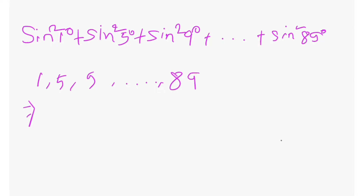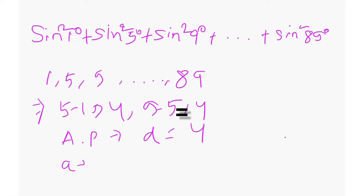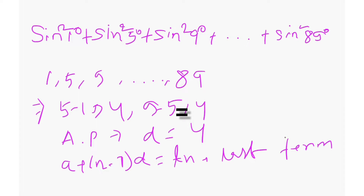You can see there is a common difference of 4 between every two consecutive terms. This series forms an arithmetic series with common difference 4, whose last term is 89 and first term is 1. We are going to use the formula: a plus (n minus 1) into d equals t_n, where t_n is the last term, d is the common difference, n is the number of terms, and a is the first term.